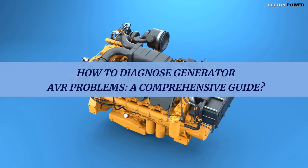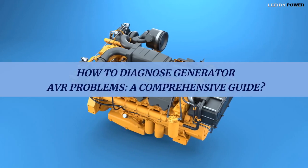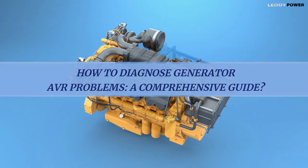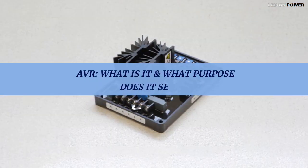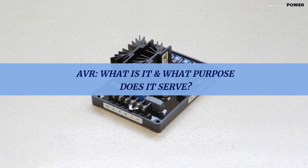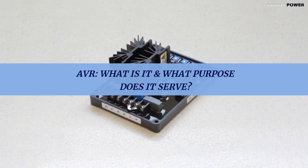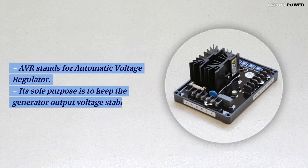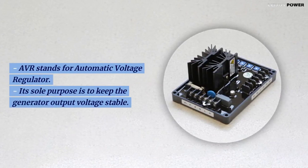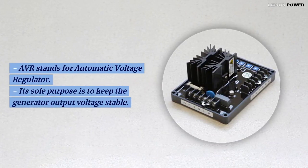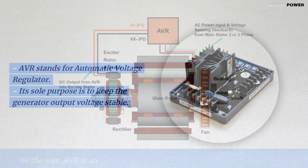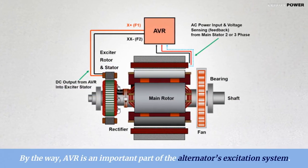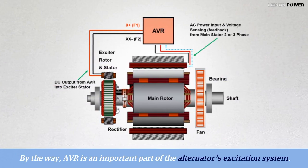How to diagnose generator AVR problems — a comprehensive guide. AVR: what is it and what purpose does it serve? AVR stands for automatic voltage regulator. Its sole purpose is to keep the generator output voltage stable. AVR is an important part of the alternator's excitation system.